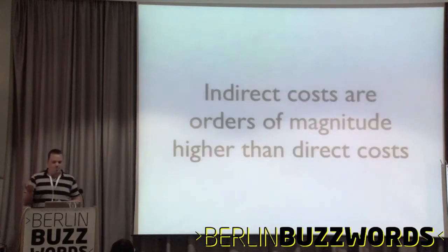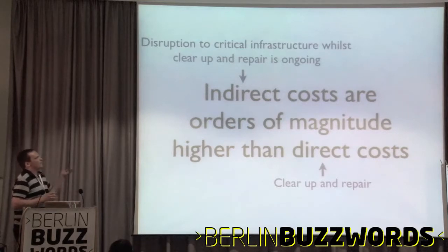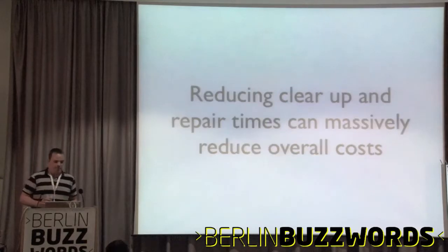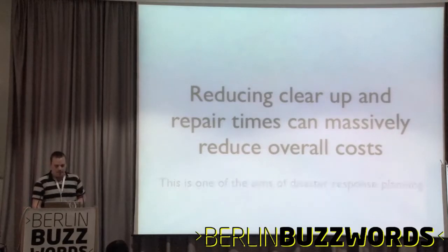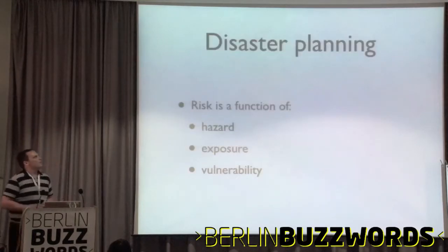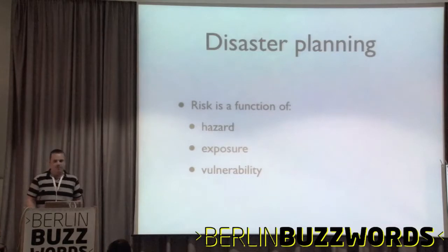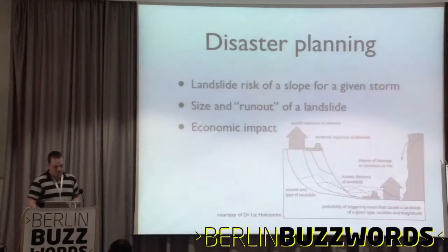Indirect costs are orders of magnitude higher than direct costs. Whilst your clear-up and repair costs are high, you're racking up exponentially higher indirect costs during that time. That implies that if you reduce your clear-up and repair times, you can massively reduce the overall costs of landslide events. If you're into disaster planning, you want to know the risk, which is a function of hazard — the probability of an event — the exposure, which is who or what is affected, and the vulnerability, which is how much it's affected.